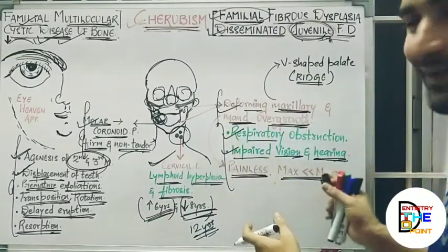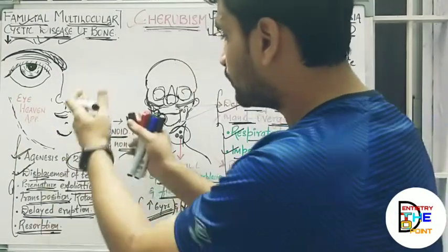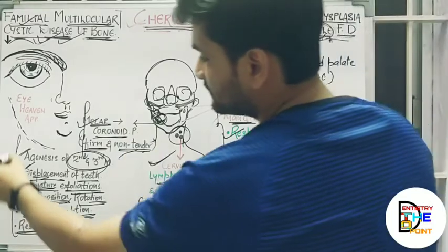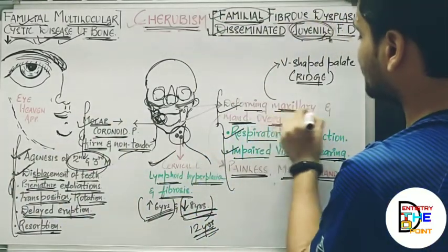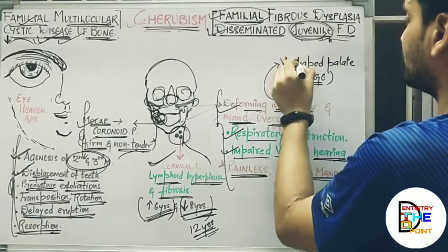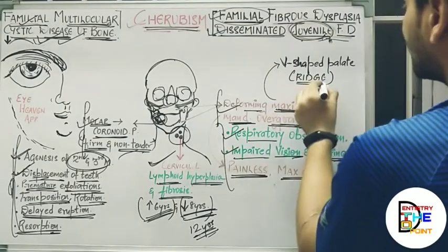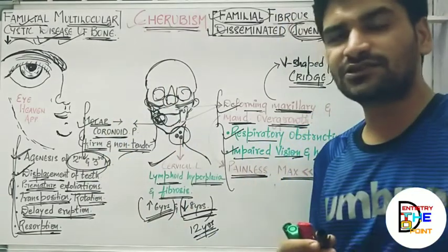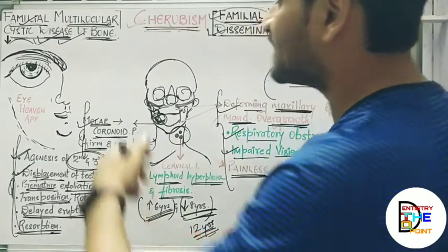To summarize: deforming maxillary and mandibular overgrowth, cervical lymphadenopathy, and mandibular involvement from molar to coronoid process. If the maxillary ridge is involved, there will be a V-shaped palate — the palate becomes V-shaped, the ridge is enlarged, and it is firm and non-tender.